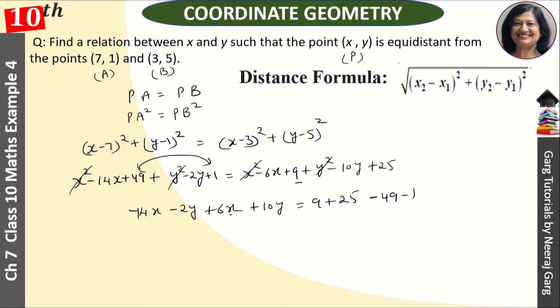So -8x + 8y equals 9 + 25 on this side, and -49 - 1 on that side, which equals -16.